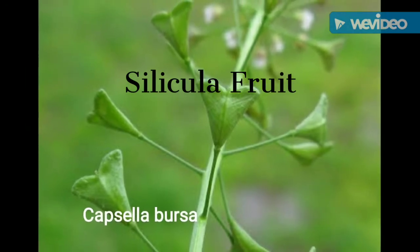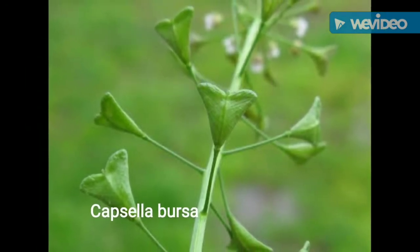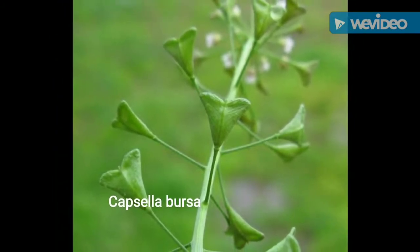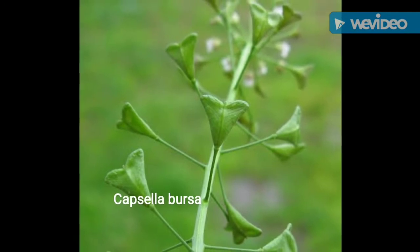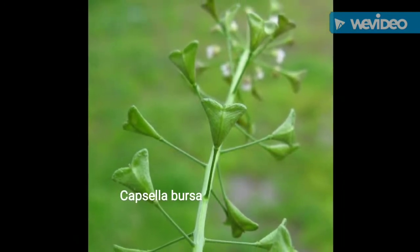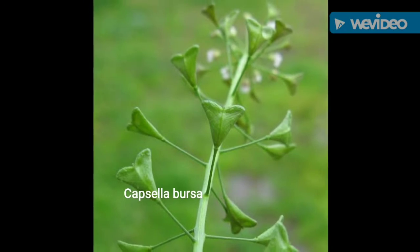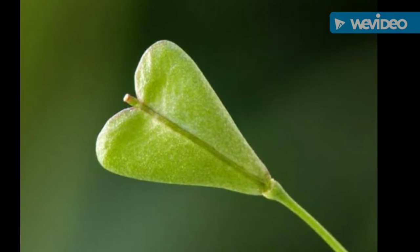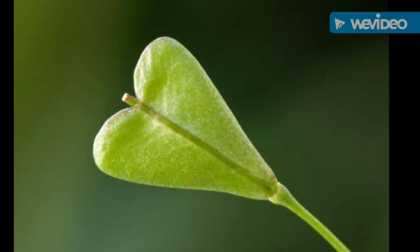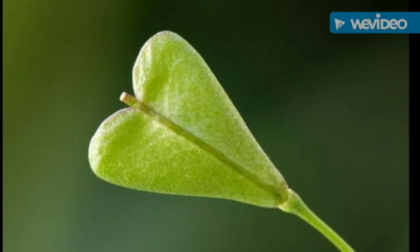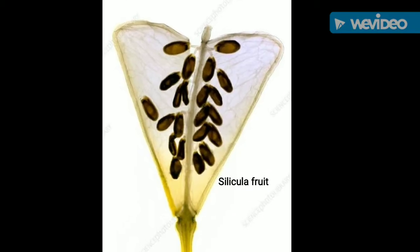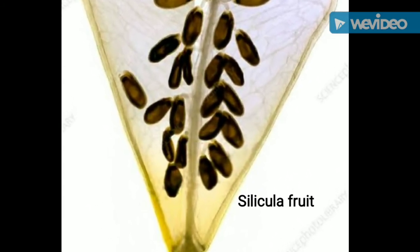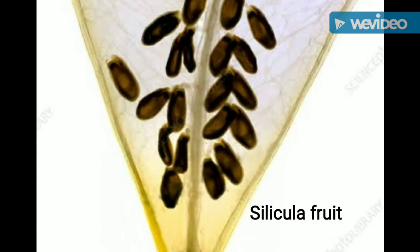Another one — silicula. A short and broad silicula fruit contains a limited number of seeds. It consists of a limited number of seeds and is called the silicula fruit. Example: Capsella bursa-pastoris. It is a very beautiful, low symbol fruit consisting of limited seeds only.